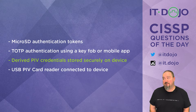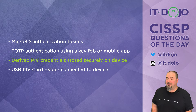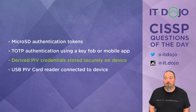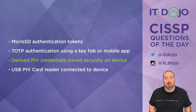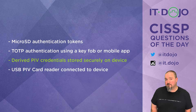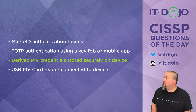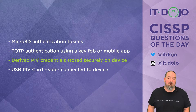Choice number three says to use derived PIV credentials stored securely on the device. Derived PIV credentials are essentially a virtual PIV card on the device. A PIV card — or CAC in the DoD — is a smart card that you plug into a reader on a device to log in or access certain sites. They can be read wirelessly but it's far more common to use a physical reader either built into the computer or connected via USB.